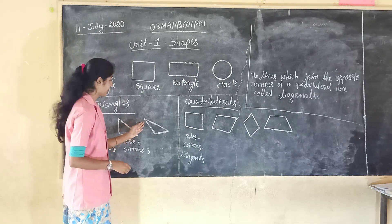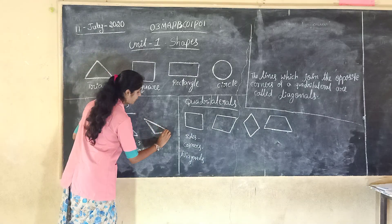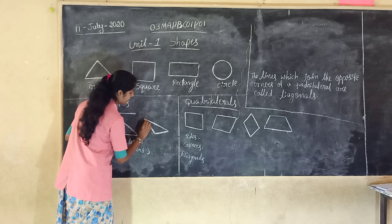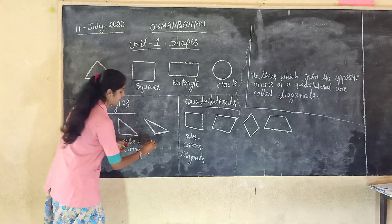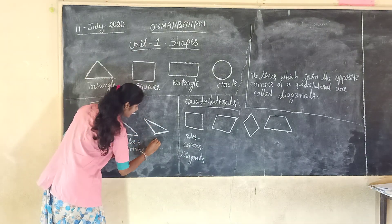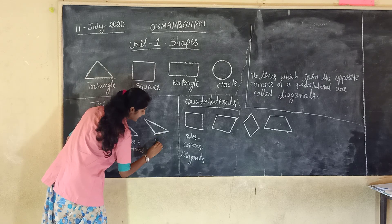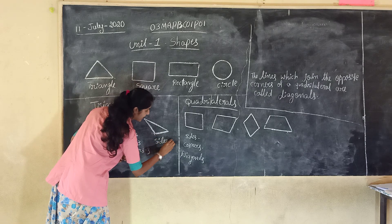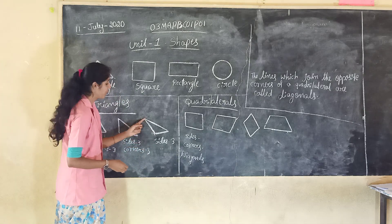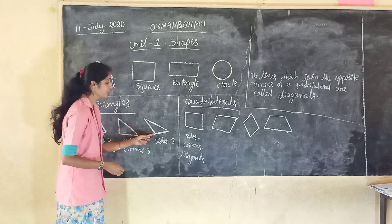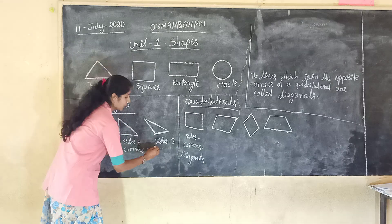Here, in this triangle — one side, two side, three side, total. How many sides? Three sides and corners — one, two, three. Total three corners.